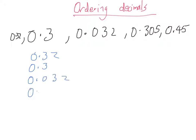0.305 and 0.45. What you should hopefully notice about the way I've written this vertical list is I've lined up all my decimal points.